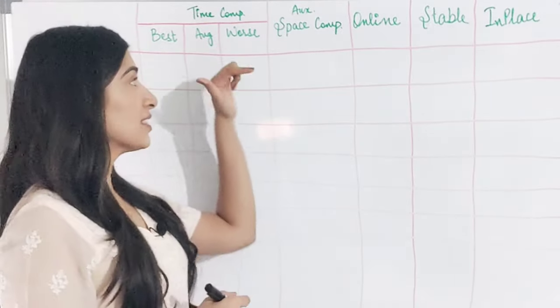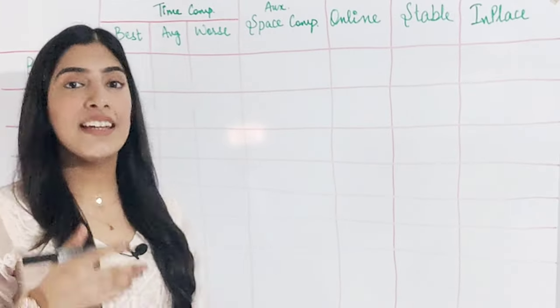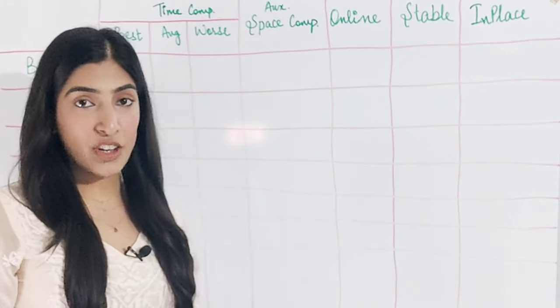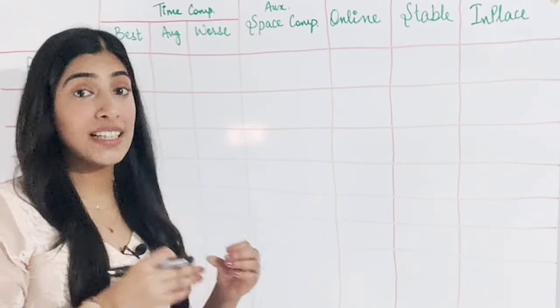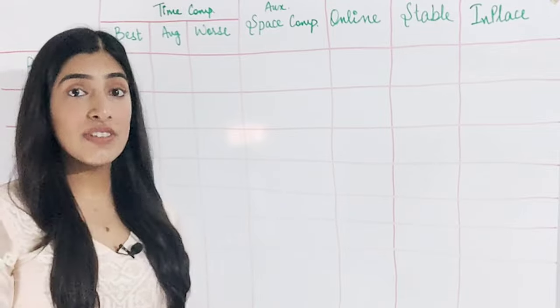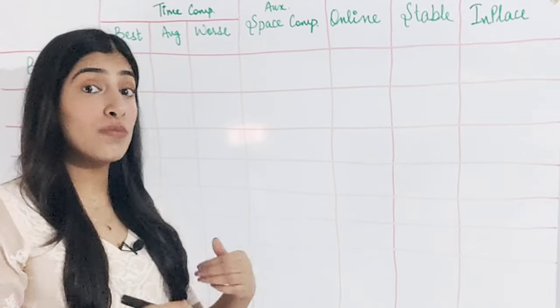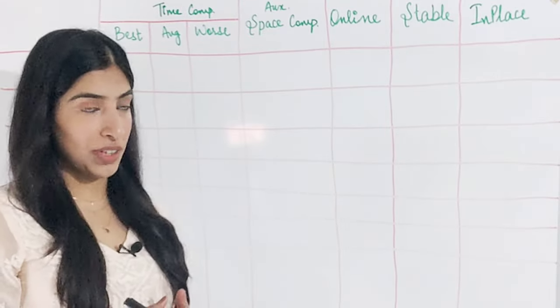Next, we will be considering auxiliary space complexity. In auxiliary space complexity, we don't consider the space that the input array takes. Instead, we just see how much extra space our algorithm requires.